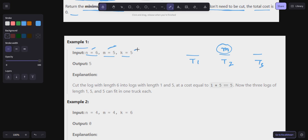In one truck we can only add 5, so we have to cut it in two pieces. Let's cut it like this: one is 5 and one is 1. So 5 can go here and 1 can go here. The total cost that is coming out is 5 into 1.